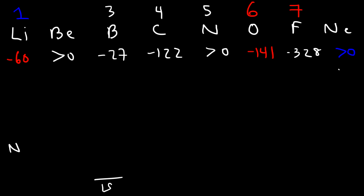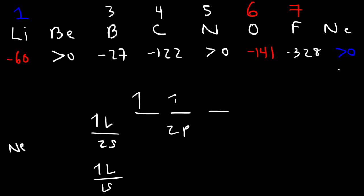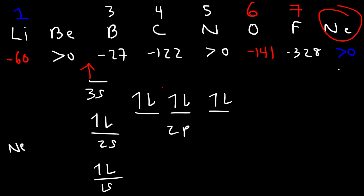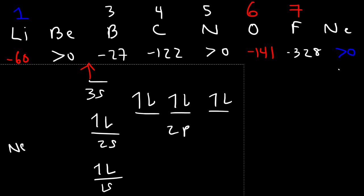The same is true for noble gases. Neon has the configuration 1s² 2s² 2p⁶. To add an electron you'd have to place it in a 3s orbital. Anytime you put a new electron in a higher energy level it's an endothermic process — that's why all noble gases are endothermic when you add an electron.